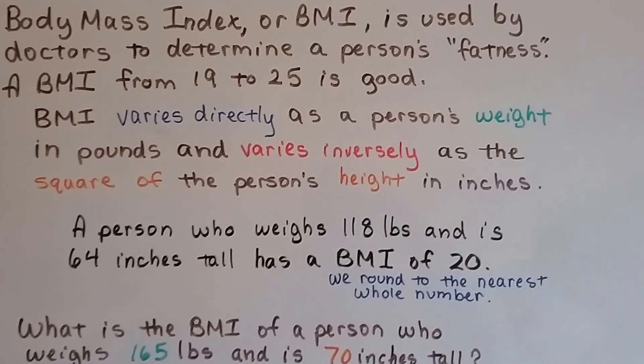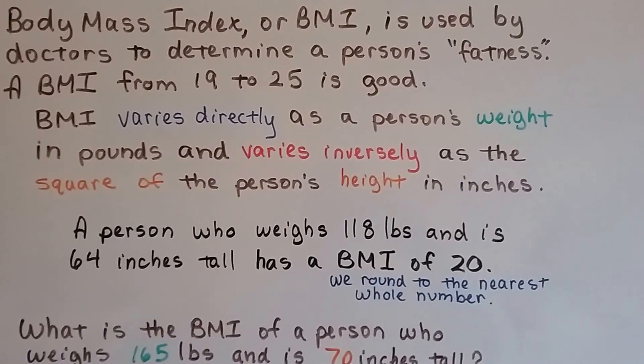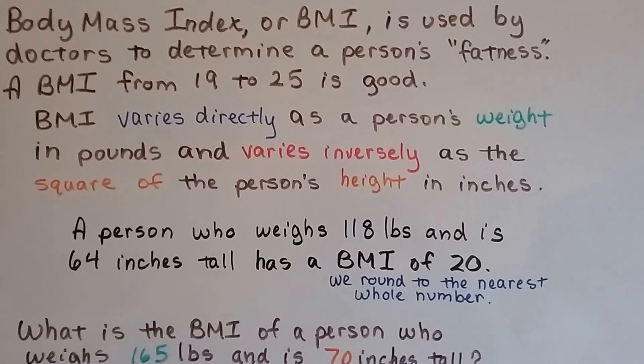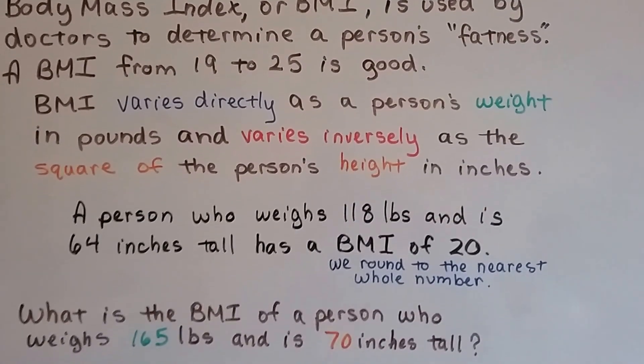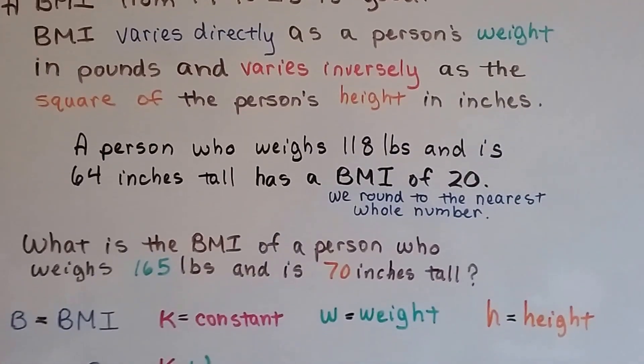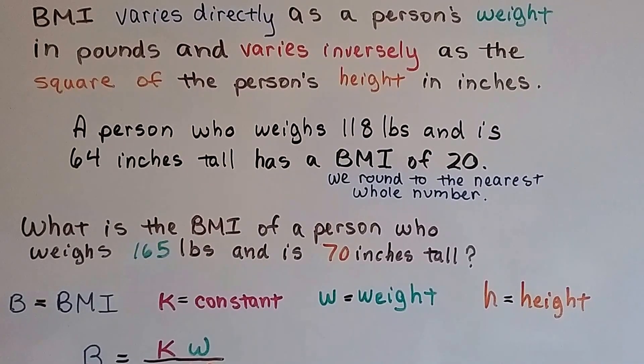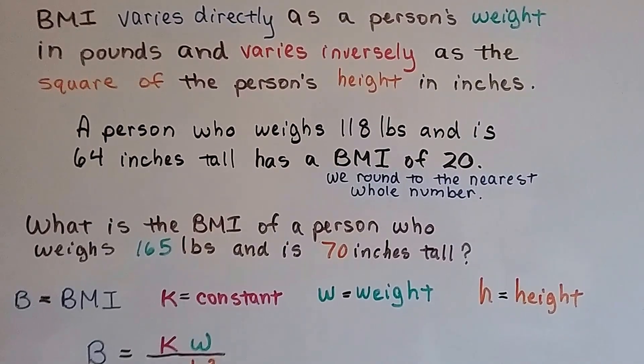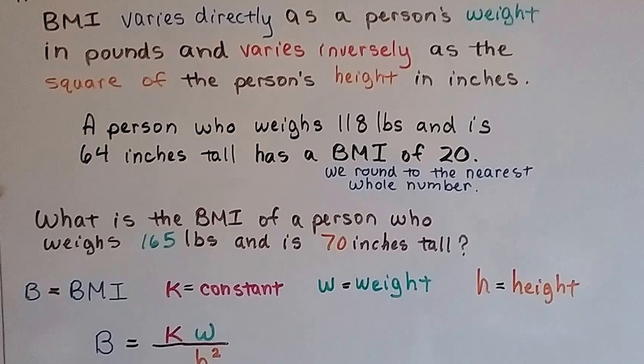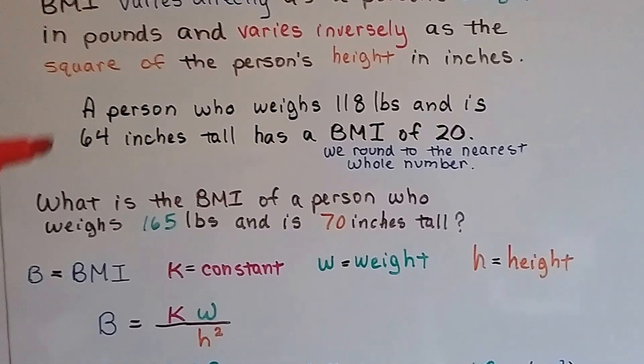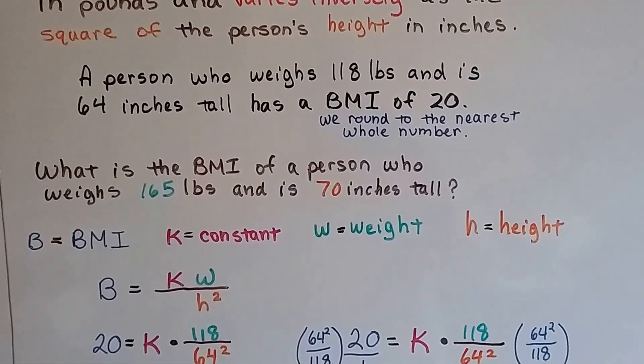A person who weighs 118 pounds and is 64 inches tall has a BMI of 20. We round it to the nearest whole number. We don't use decimals. But what is the BMI of a person who weighs 165 pounds and is 70 inches tall? We're going to use this information to help us solve this one. We'll find the constant.